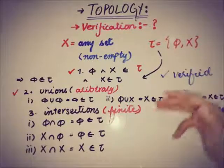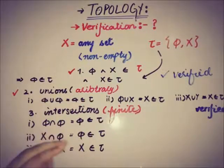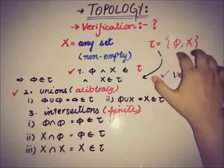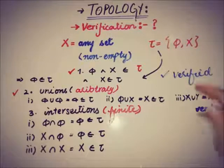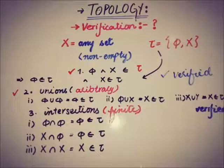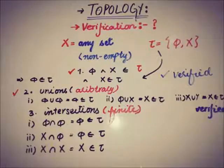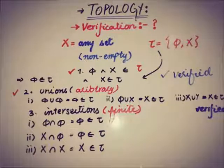This verifies all three basic conditions: the first about the empty set and X, the second about unions, and the third about intersections. This means this collection of subsets forms a topology on X. Because this is a very important topology, it is called the indiscrete topology. We will verify any collection of subsets using these three basic properties. In the next video we will talk about the union of topologies and whether the union of topologies is also a topology or not. Stay tuned, goodbye.